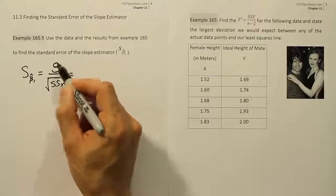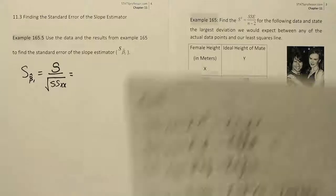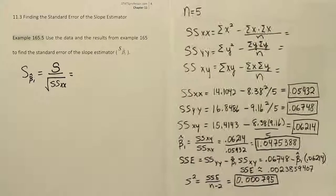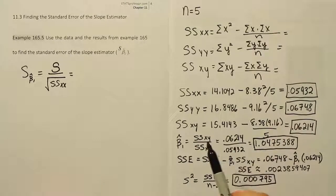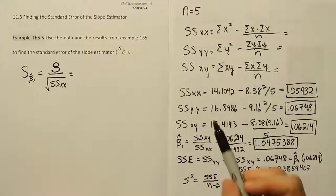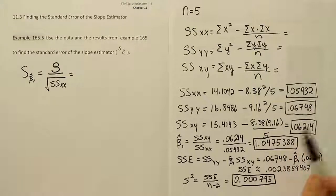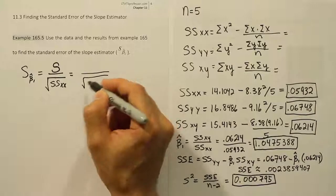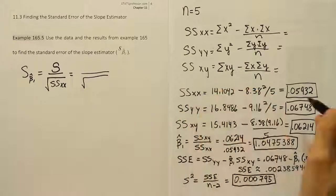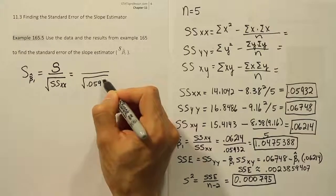So we need to basically have two things from the work we did before. Now if you look at the work we did for 165, we actually had as far as the sum of squares for xx we had the answer .05932, so that part we can fill in now. Square root of, so ssxx was .05932.